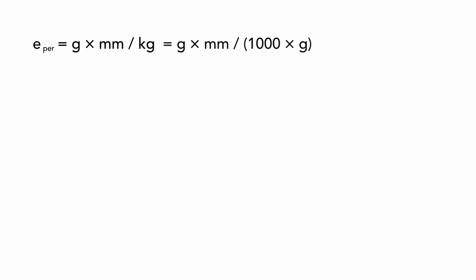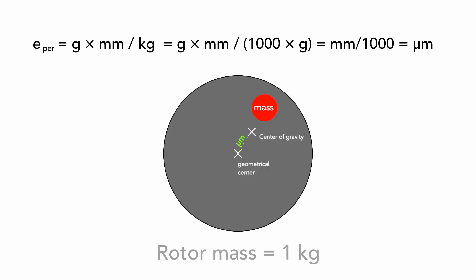That is the reason why we use these units for E-per. We can work with this fraction. Kilogram is equal one thousand times gram. Now we can shorten the grams. We get millimeter divided by one thousand. And it is the micrometer. It means the E-per is the permissible distance between geometrical center and the center of gravity in micrometers for rotor mass one kilogram.